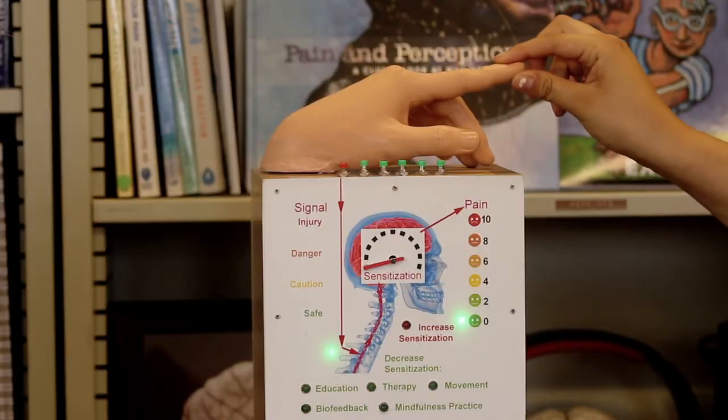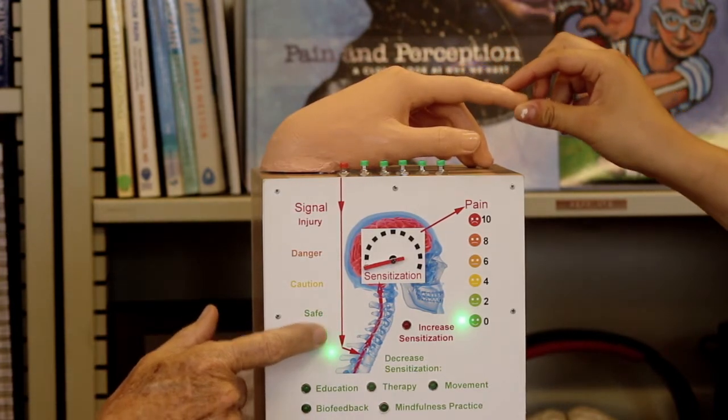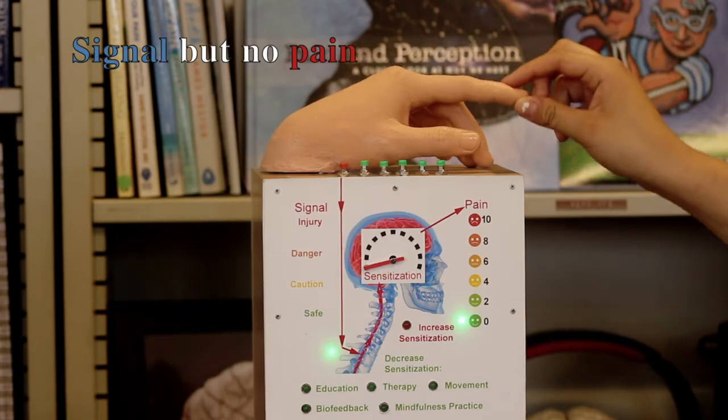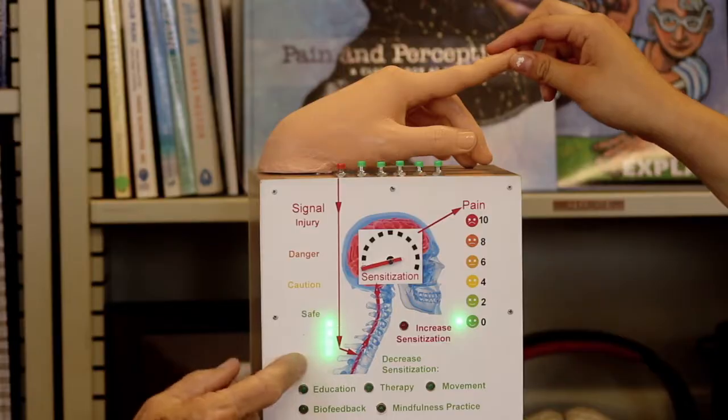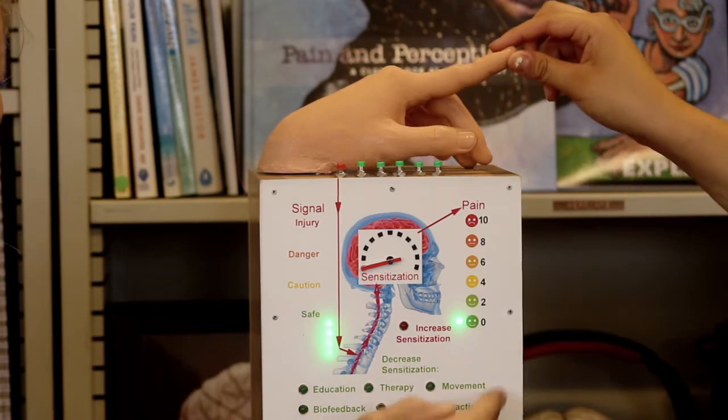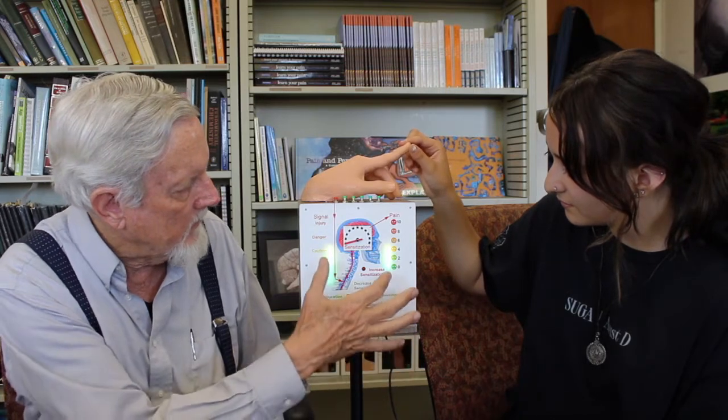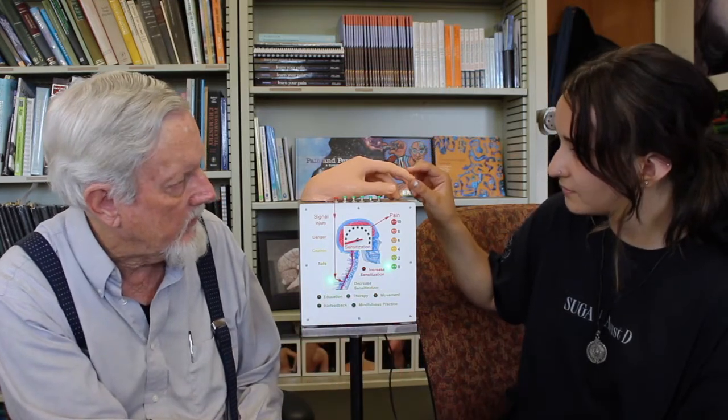Alright, let's look at the model to see how that works. First, just lift the finger a little bit. As you lift the finger just a little bit, there's sensation there. There's a signal coming from the hand, but there's no pain. If you lift it a little bit more, you start getting pain. As you lift it into more dangerous regions, you start feeling more and more pain, and so the pain is an accurate representation of your danger. This is how pain should work.